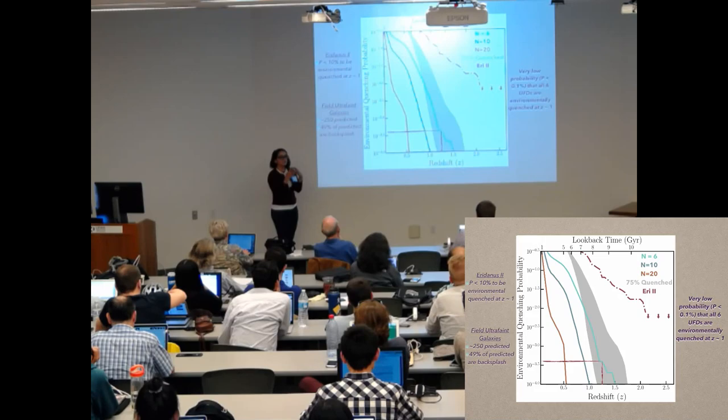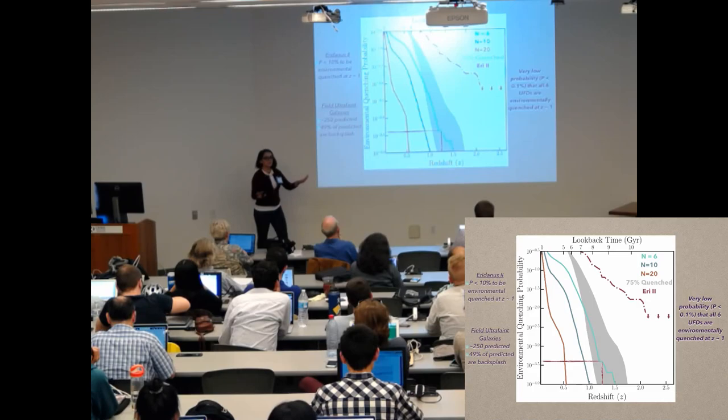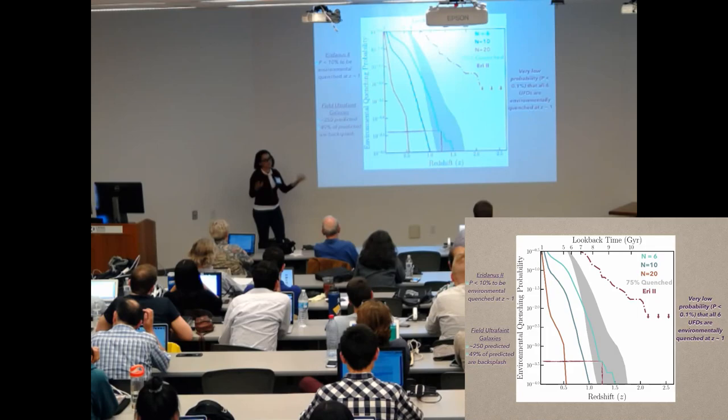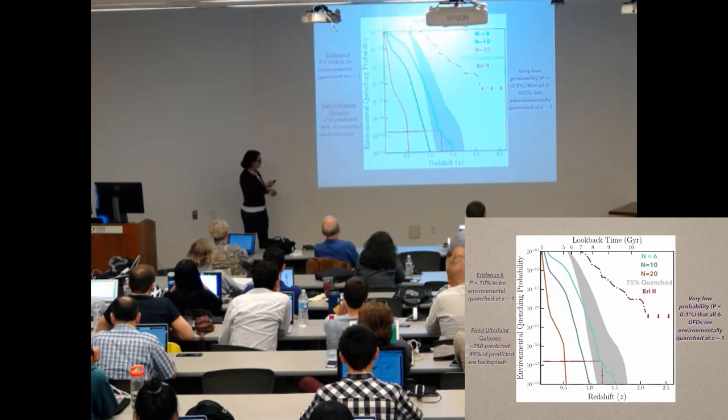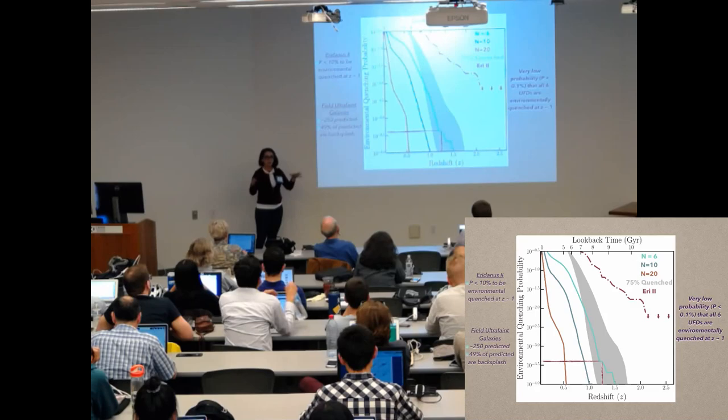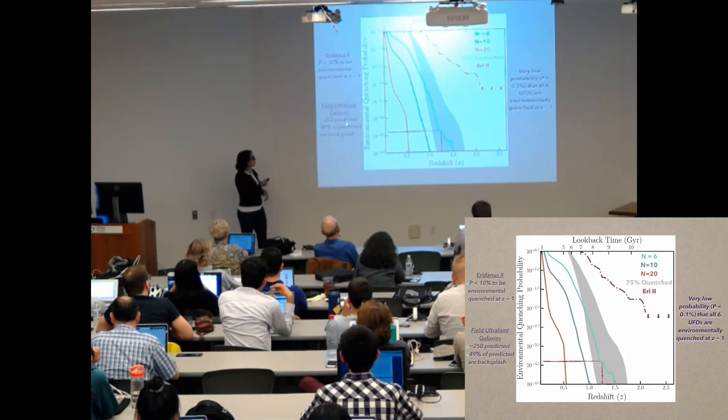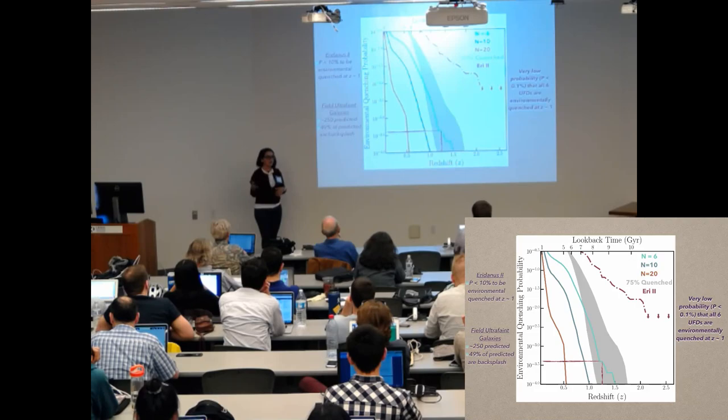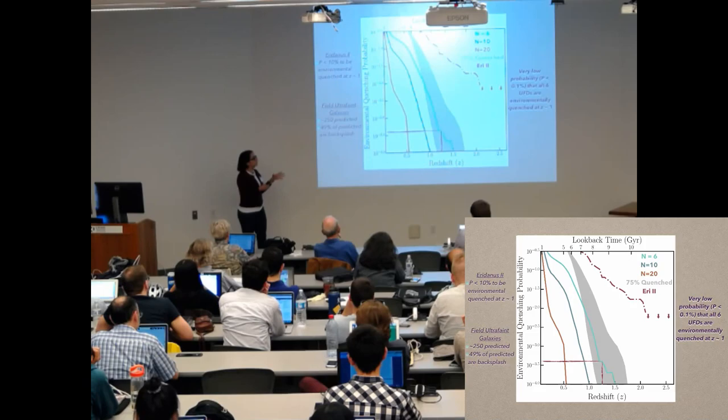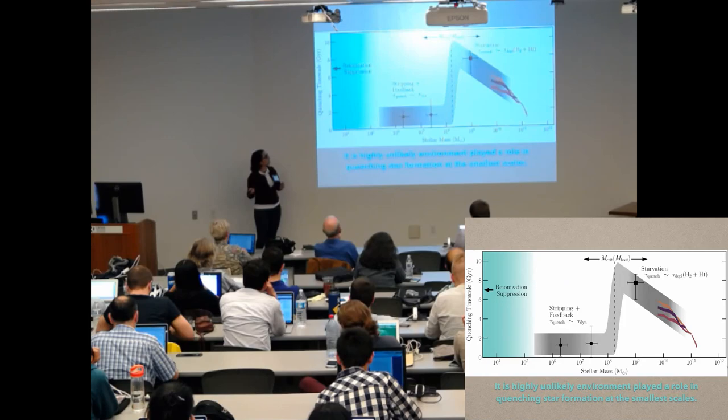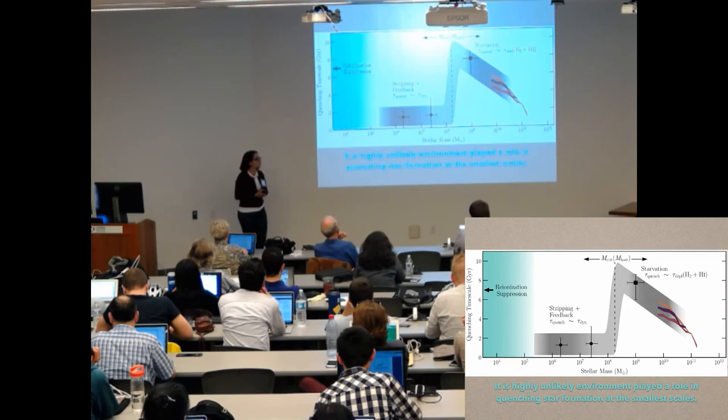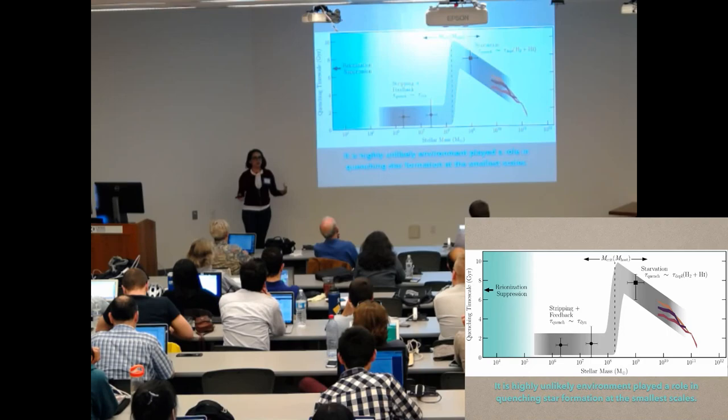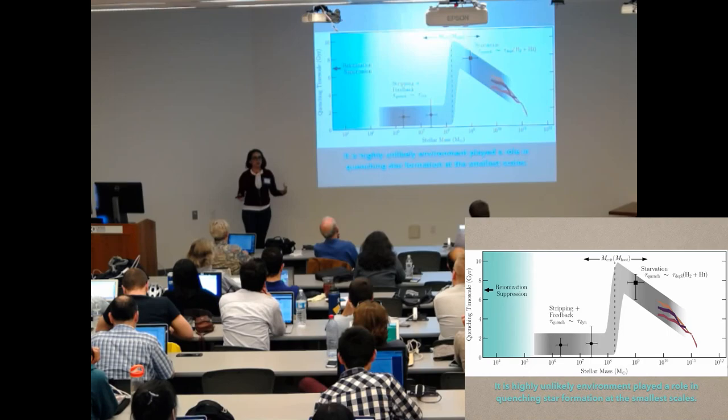And now the last thing, if we had a truly isolated field dwarf galaxy, ultrafaint dwarf galaxy that had just ancient stars in it, then we could say this is not an environment that quenched it because it hasn't been in an environment. We haven't seen that yet, but in Elvis there's about 250 predicted that we could see around the local group. So hopefully in the future we'll find these. But I will say that there's about 49% of that 250 that are expected to be backsplashed, so they were once inside the Milky Way's halo and have come back out. So we can really say that it is very unlikely that environment played a role in quenching the star formation of the ultrafaint dwarf galaxies. I can add a little bit to this big picture of satellite galaxy quenching and say that it is most likely reionization because it's probably not environment. Thank you.